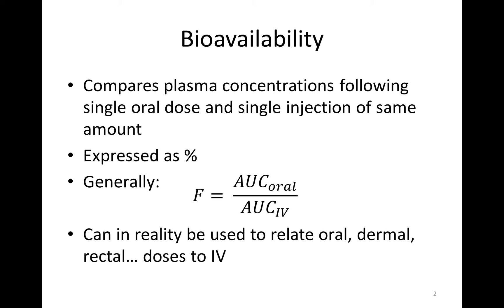In order for an oral dose of drug to make it into the circulation, it must do two things: it must escape barriers to absorption through the gut, and it must escape metabolism in the liver, known as hepatic extraction.